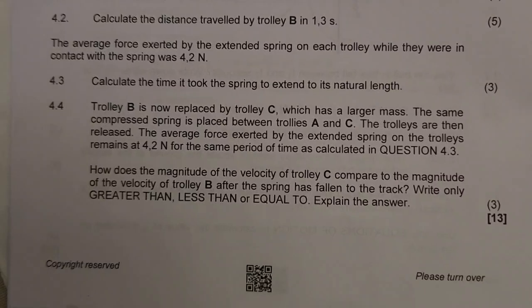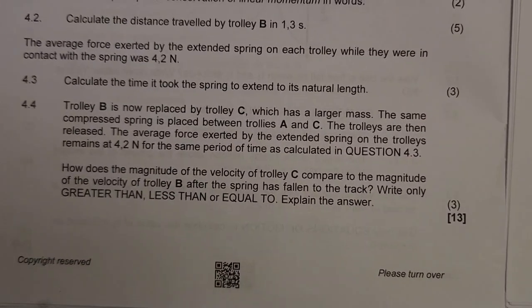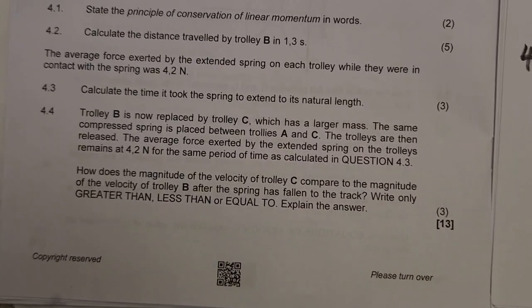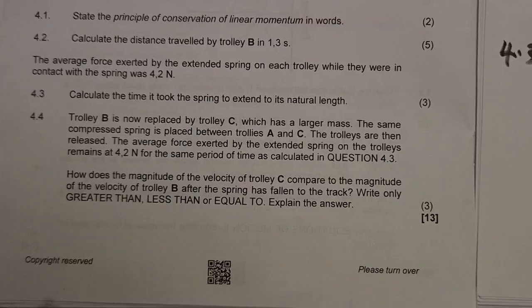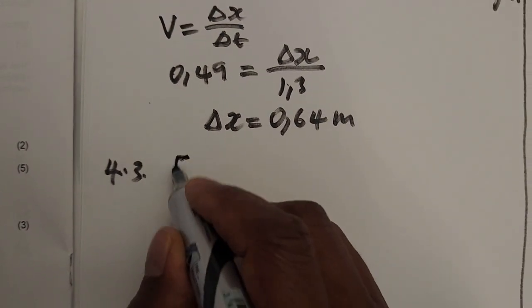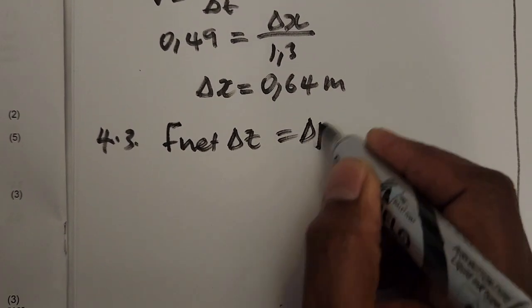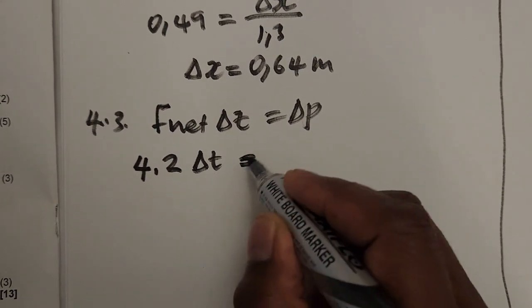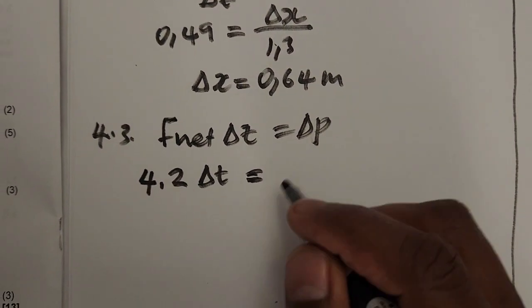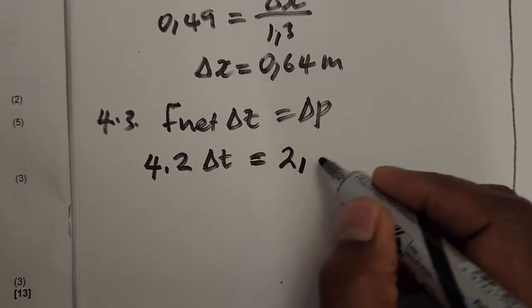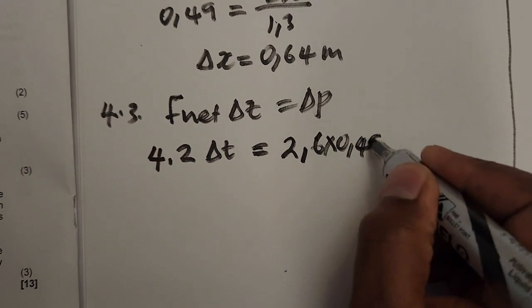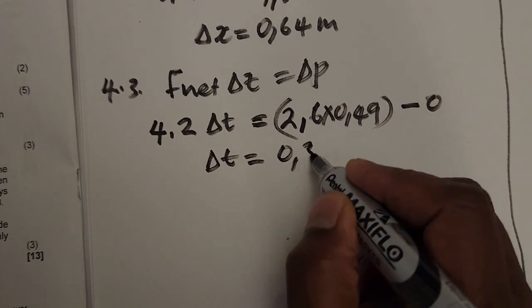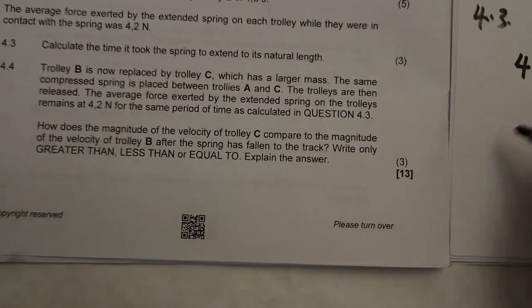Question 4.3 states that the average force exerted by the extended spring on each trolley while in contact was 4.2 N. We need to calculate the time it took the spring to extend to its natural length. The only formula in this section dealing with average force is the impulse-momentum theorem: F_net × Δt = Δp. With F = 4.2 N and taking trolley B: Δp = 2.6 × 0.49 − 0 = 1.274 N·s. So Δt = 0.3 seconds.